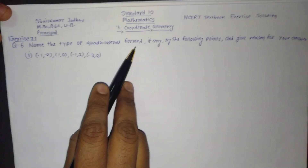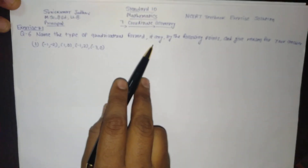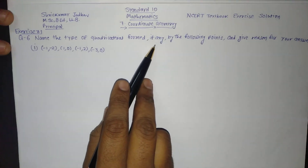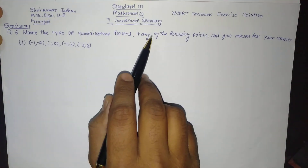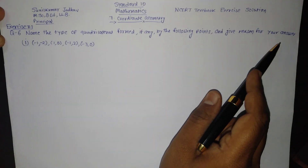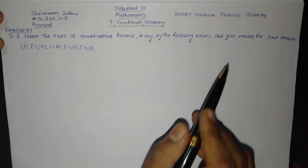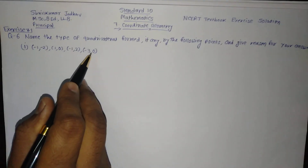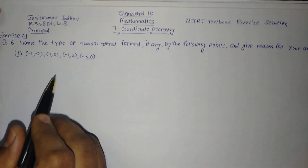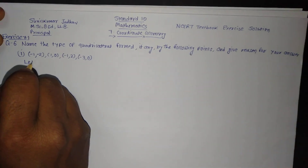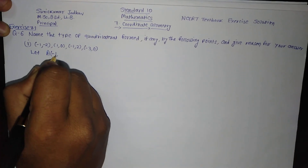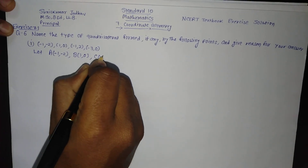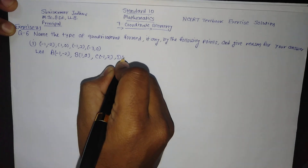Name the type of quadrilateral formed. If any points are given, we want to give the name of the quadrilateral formed by the given points — name the type of quadrilateral formed, if any, by the following points and give a reason for your answer. Question number 1: the points are (-1, -2), (1, 0), (-1, 2), (-3, 0). These are the coordinates given. Let us begin with the assumption: let point A be (-1, -2), B be (1, 0), C be (-1, 2), and D be (-3, 0).